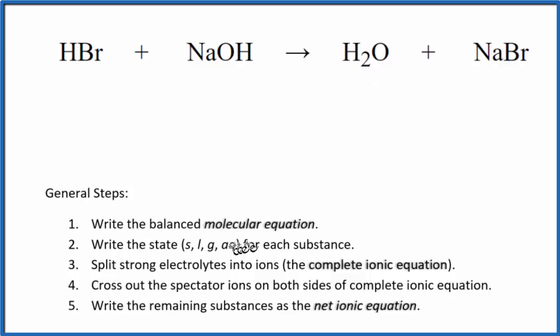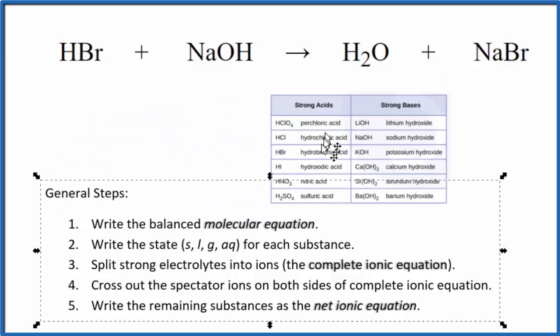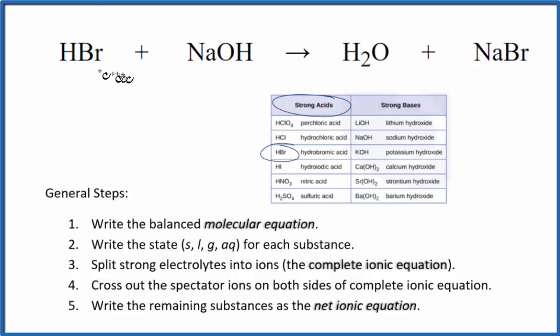Then we need to write the states for each substance. When we look at HBr, if we've memorized our strong acids and strong bases, we can see that right here, HBr, that's a strong acid. That means it's going to dissociate completely. So whatever dissolves will dissociate completely, so we write AQ.